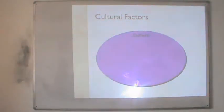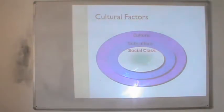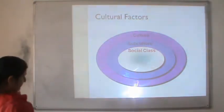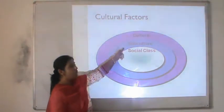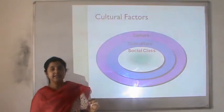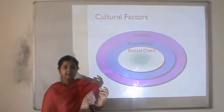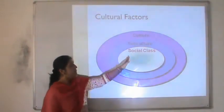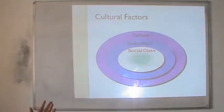Every consumer has a certain culture, decided by the nationality or region a person stays in. Every culture has subcultures more closely defined by the group of people you are associated with, and social class is depicted by the locality you stay in. There are various cultures like American, Western, European, Australian and Chinese. Within Indian culture we have subcultures like Hinduism, Jainism, Sikhism, Islam — each with different languages, clothes and festivals. Social class divides consumers into middle class, lower class and upper class.